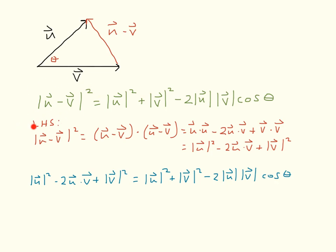Looking at the left-hand side, the magnitude of u minus v squared equals the dot product of (u minus v) with itself. Using the distributive properties, we can expand and simplify. The end result is u dot u minus two times u dot v plus v dot v, or equivalently, the magnitude of u squared minus two times the dot product of u and v plus the magnitude of v squared. Substituting this back into the law of cosines expression gives us the full equation.